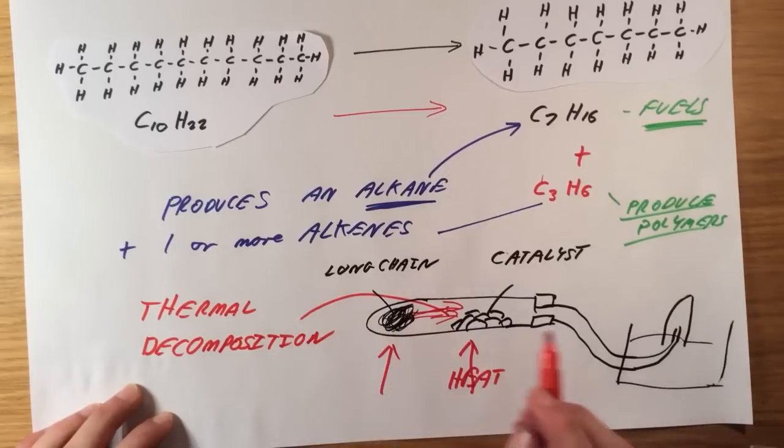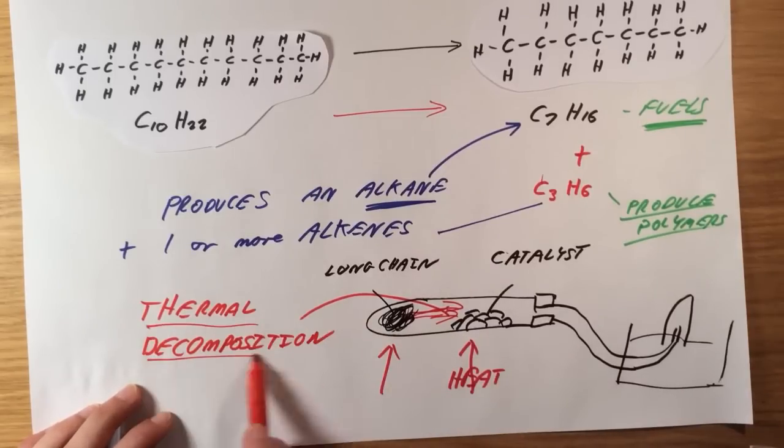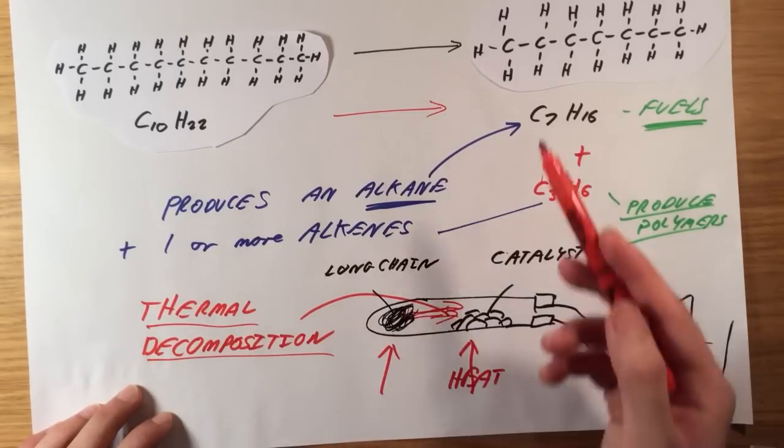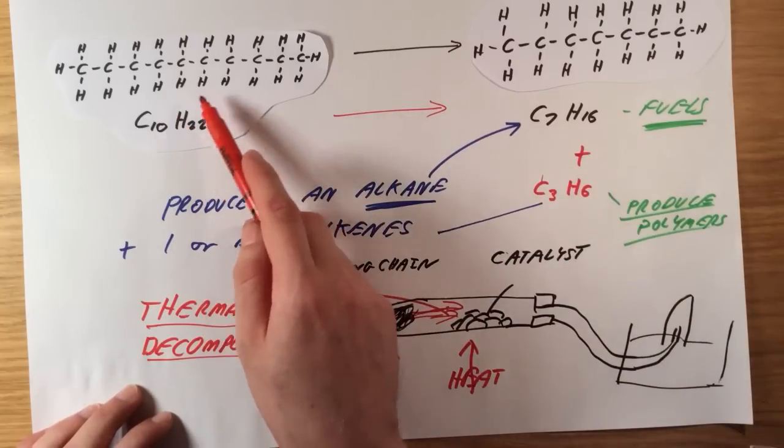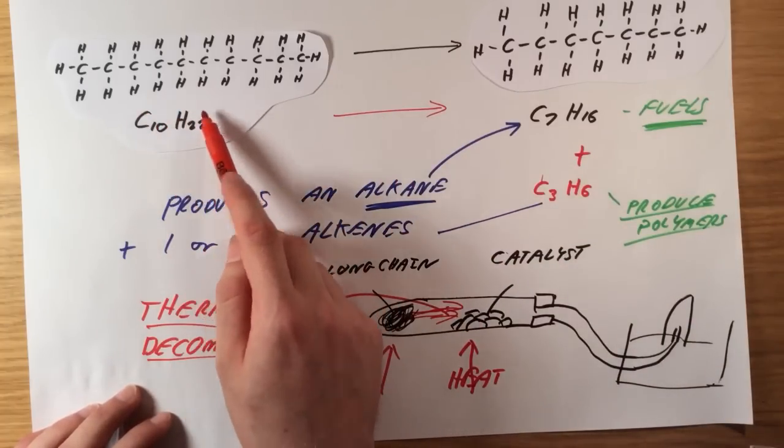Just like limestone does when you heat it up, it means breaking down a compound using just heat. So if you look at my equation at the top, I've got no other reactants apart from decane, this C10H22. It's breaking up just using heat and a catalyst and forming two products.